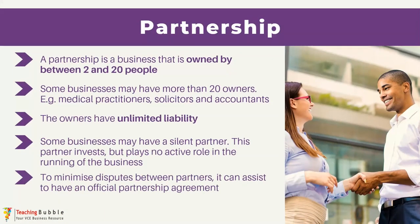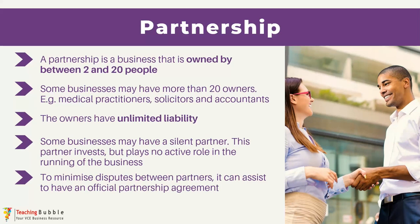Our next type of business is a partnership, which is a business that's owned by between two and 20 people. There are some instances where partnerships can have more than 20 owners — for example, medical practitioners, solicitors, accountants and the like can have far more than 20 owners. However, typically a partnership is a business owned by between two and 20 people. Those owners have unlimited liability, the same way a sole trader does, and are therefore personally responsible for any debts incurred by the business, because there's no separation between the legal entities of the owners and the business.